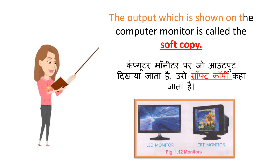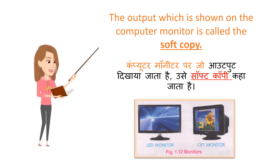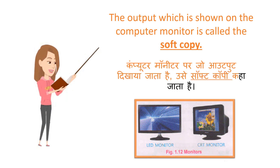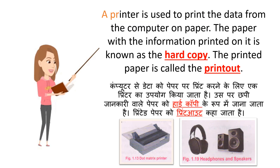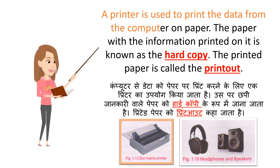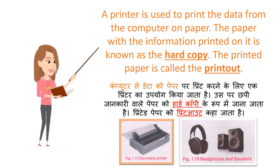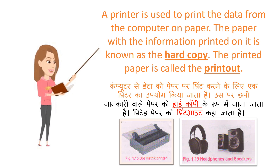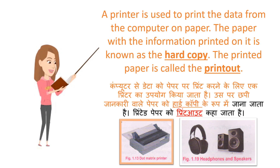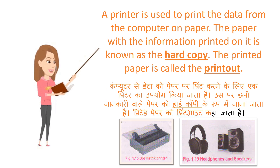The output which is shown on the computer monitor is called the soft copy. A printer is used to print the data from the computer on paper. The paper with the information printed on it is known as the hard copy. The printed paper is called the printout. Computer se data ko paper par print karne ke liye ek printer ka upyog kiya jaata hai. Us par chappi jaankari waale paper ko hard copy ke roop mein jaana jaata hai.